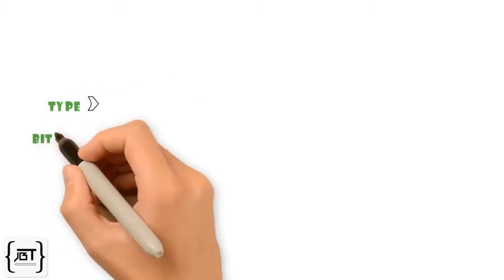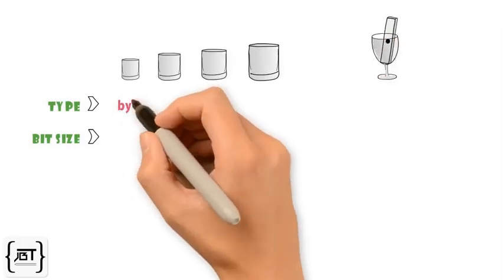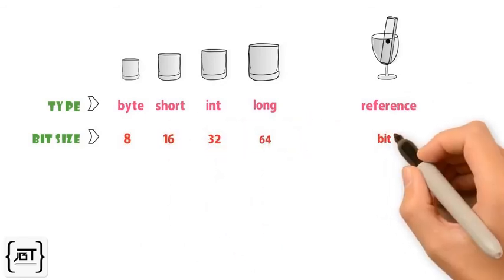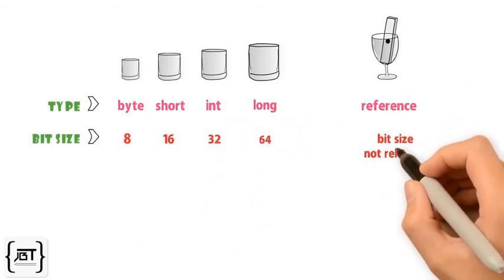We now know what is the type and value of a reference variable. Let's talk about the size. All primitive types have a fixed size, but since reference variable is just a way to get to an object, the bit size is not relevant.